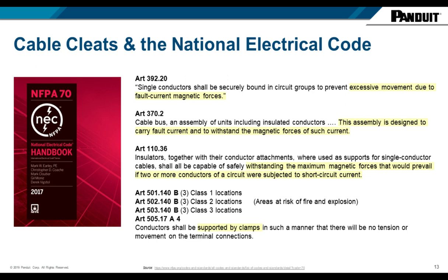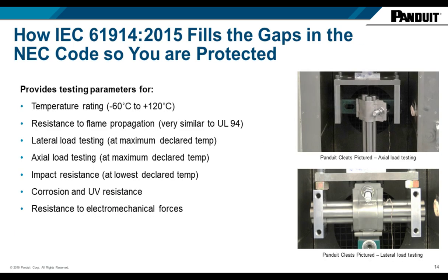Looking at the NEC — the National Electrical Code in North America — many people design and specify installations according to it. Article 392.20 asks for all single conductors to be securely bound in circuit groups to prevent excessive movement due to fault current magnetic forces. It recognizes this phenomenon, but what it doesn't do is tell you how to restrain those forces. That's where IEC 61914 comes into play.